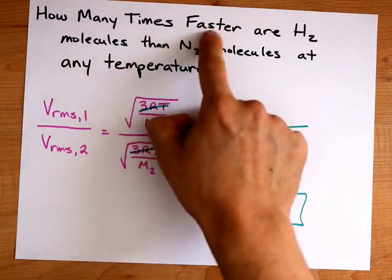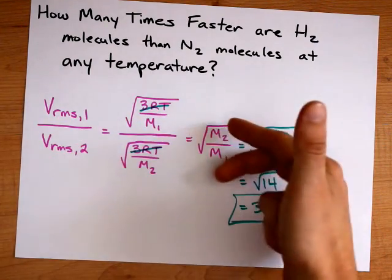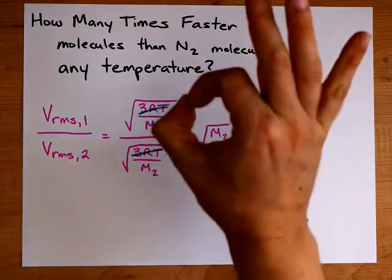The ratio of how much faster they travel, or how much faster they effuse, is the square root of the ratios of the molar masses. Best of luck.